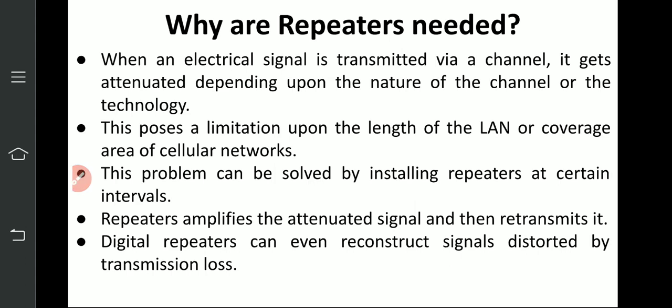Why are repeaters needed? When an electric signal is transmitted via a channel, it gets attenuated depending on the nature of the channel or technology. Signal boost power depends on the environment — in a noisy environment, attenuation can happen within one meter. This poses a limitation upon the length of LAN and coverage area of cellular networks. For example, in mobile phones, in rural or interior areas where there is no tower, repeaters are used.